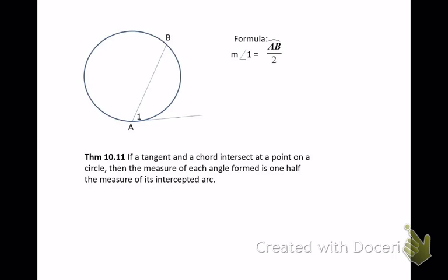There are different segments and different lines that can be drawn in circles, and the relationships all depend on what lines and segments we're talking about. The first theorem: if a tangent and a chord intersect at a point, then the measure of each angle formed is one half the measure of its intercepted arc.